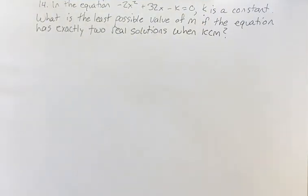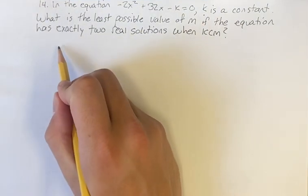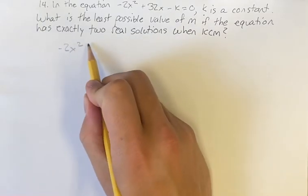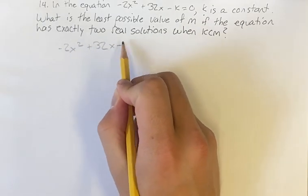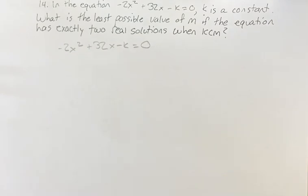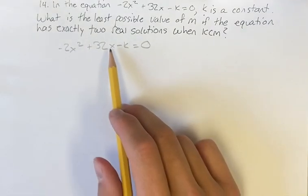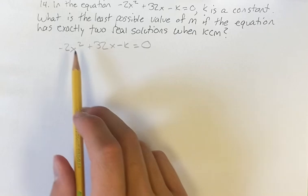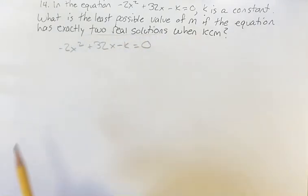Hello and welcome back to another video. This problem we're given the equation negative 2x squared plus 32x minus k equals 0. And we're going to be looking for values of k that are possible when the equation has two real solutions.